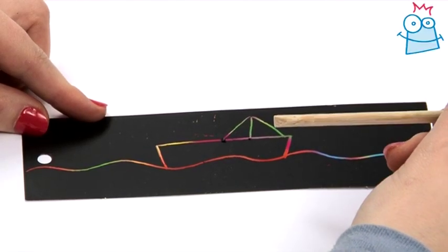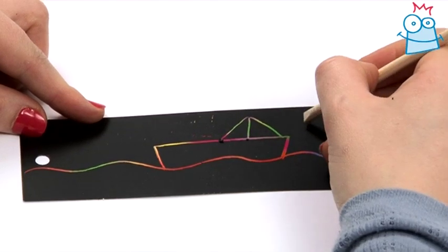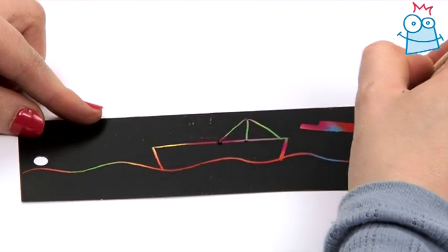Now we're going to use the thicker end of the scratching tool to scratch off the background and reveal the beautiful colors beneath to finish our sunset design.